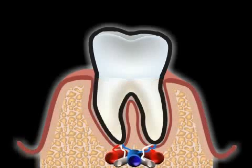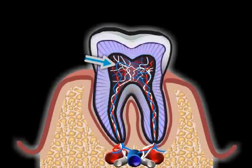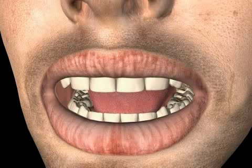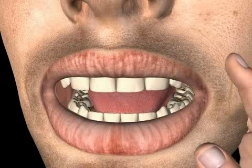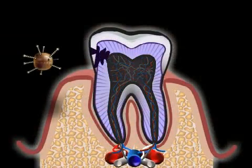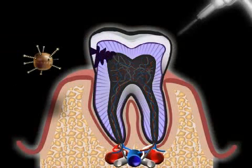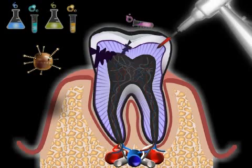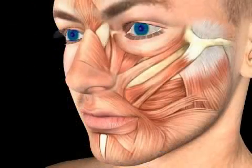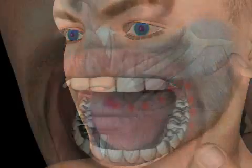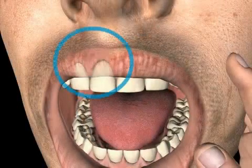A root canal treatment has to be performed if the dental nerve, known in Latin as the pulpa, has died and or is infected. As a patient you may or may not experience pain leading up to a root canal. Some causes for the pulp dying include deep-seated caries, severe heat during the cutting of a tooth, or chemicals used by the dentist, for example white fillings called composites. The commonly referred to dead tooth can lead to acute, even life-threatening complications at any time because the necrotic dental nerve tissue can cause acute infections called abscesses.